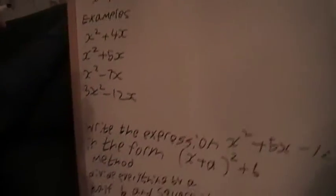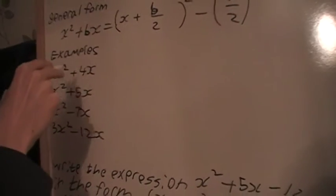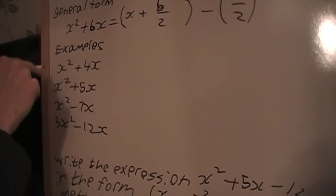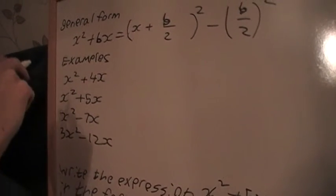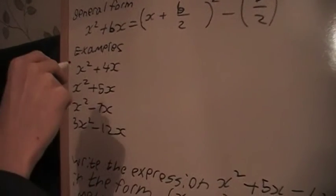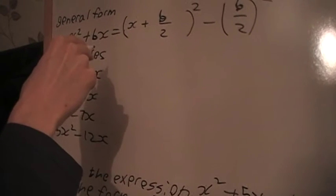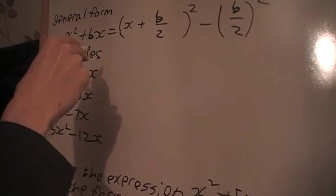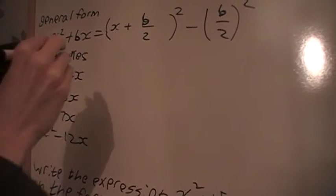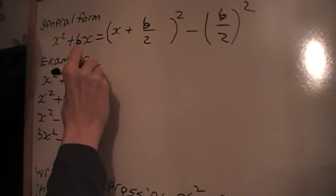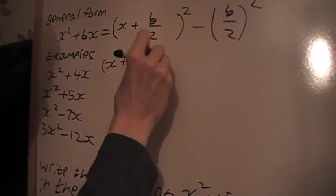So for the first example here, my b term here is 4. I don't have anything multiplying x squared, so I don't need to divide anything for this example. And I'm going to divide this by 2, which I'll get 2, and then if I square that, I'll get 4. So I'll have x plus 2 squared.